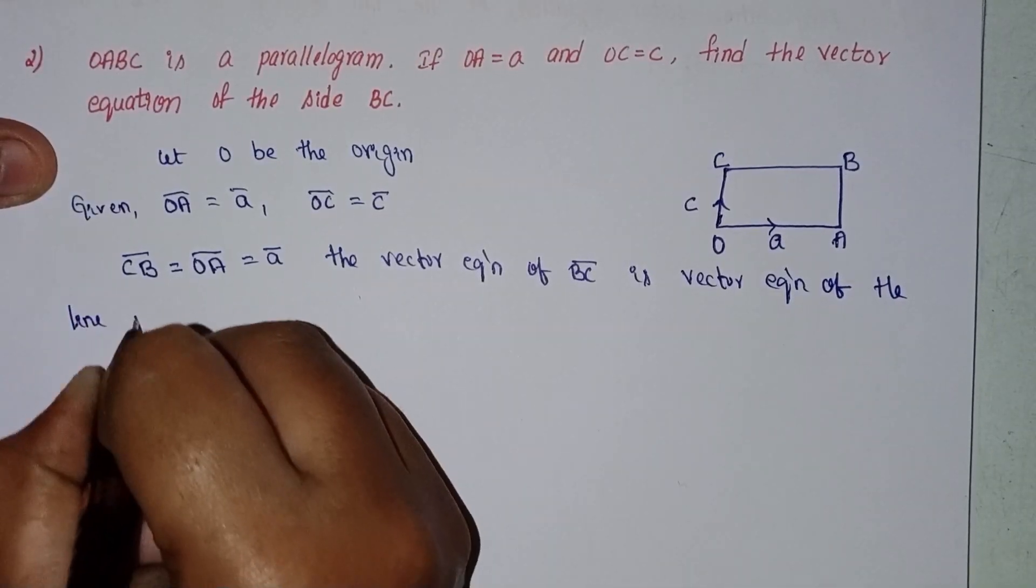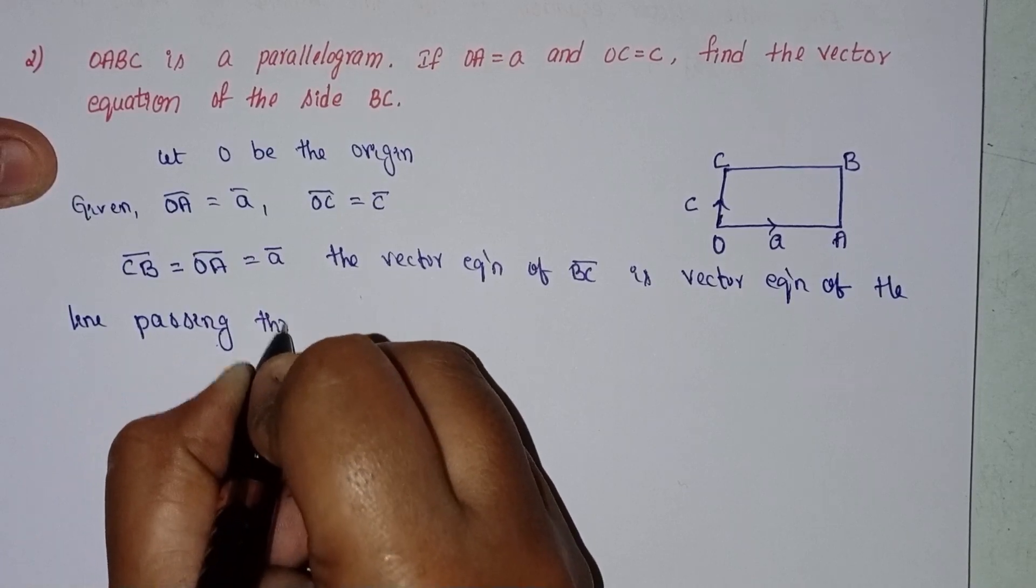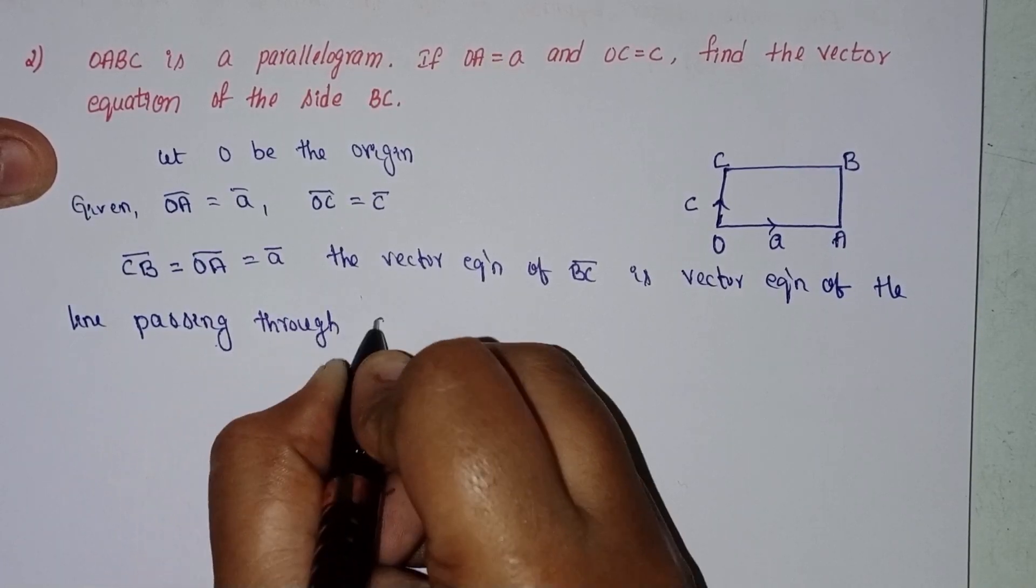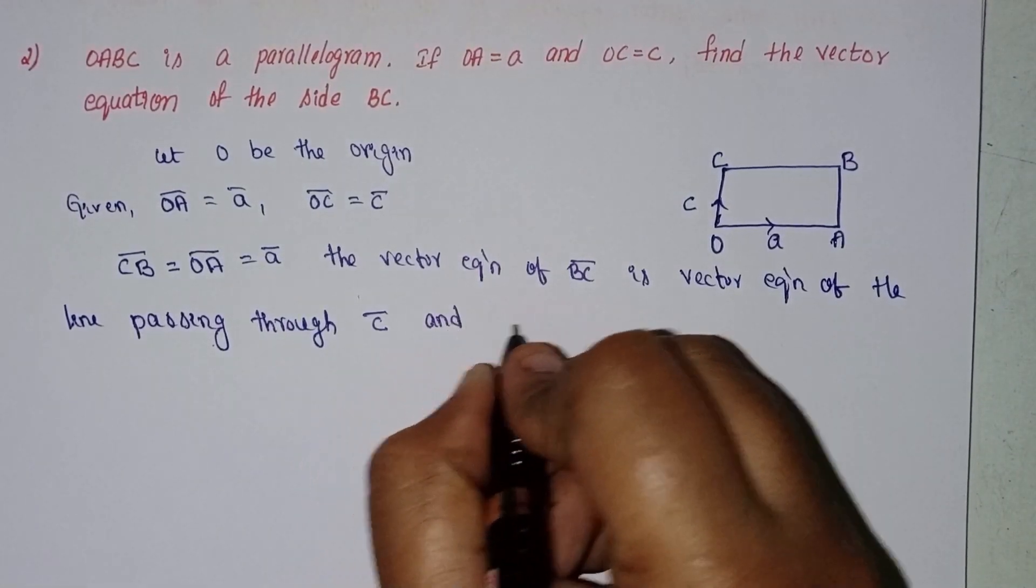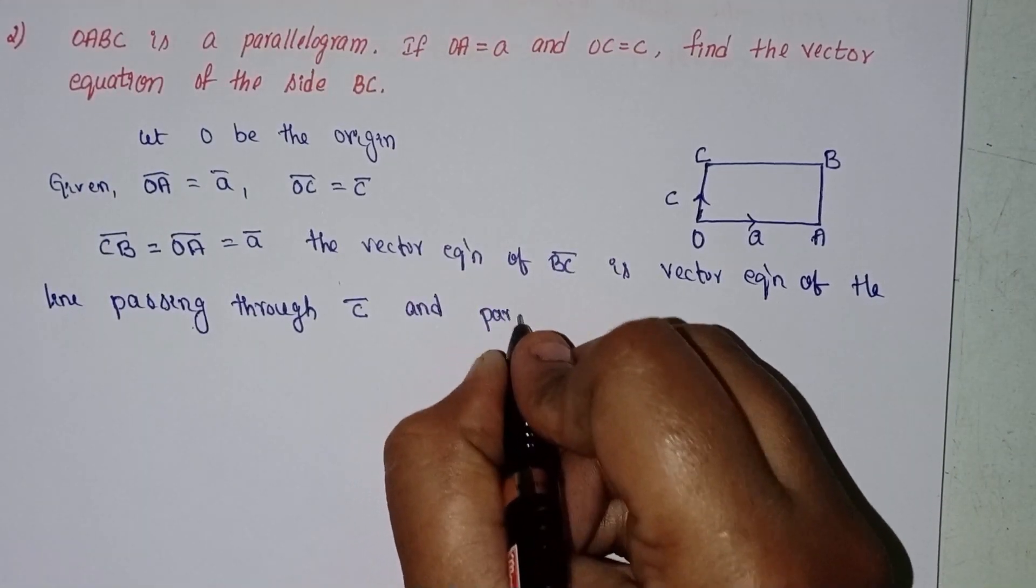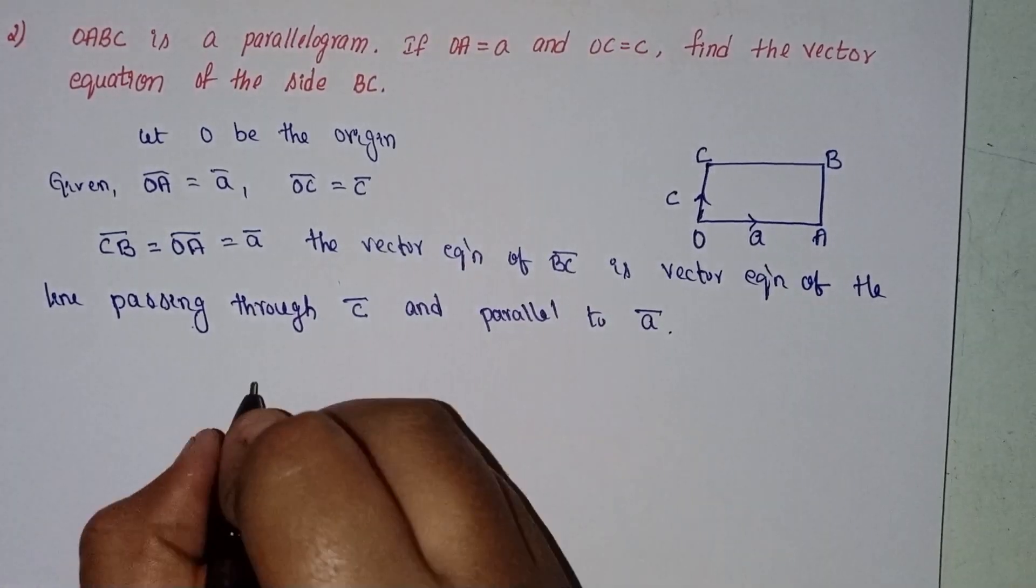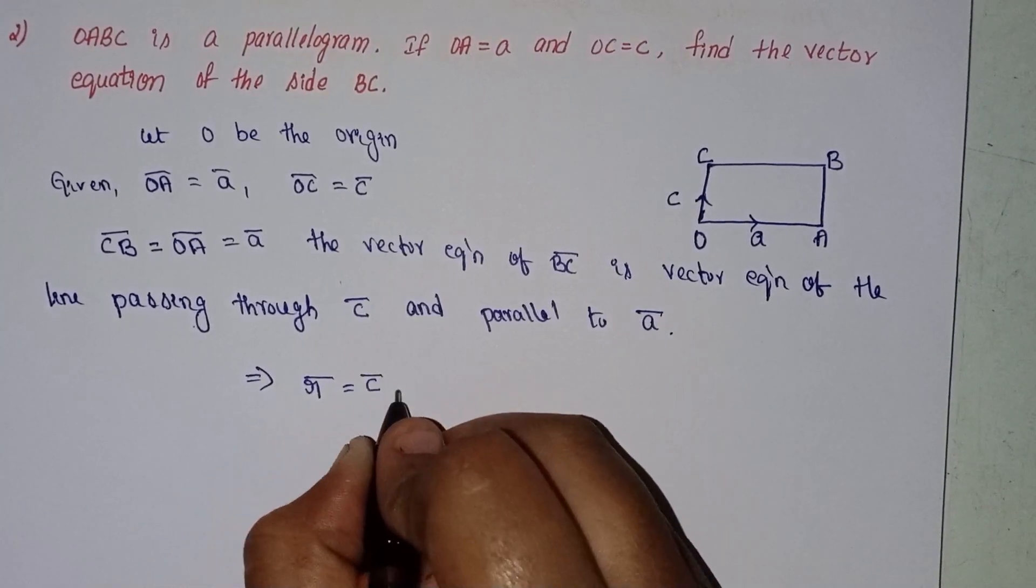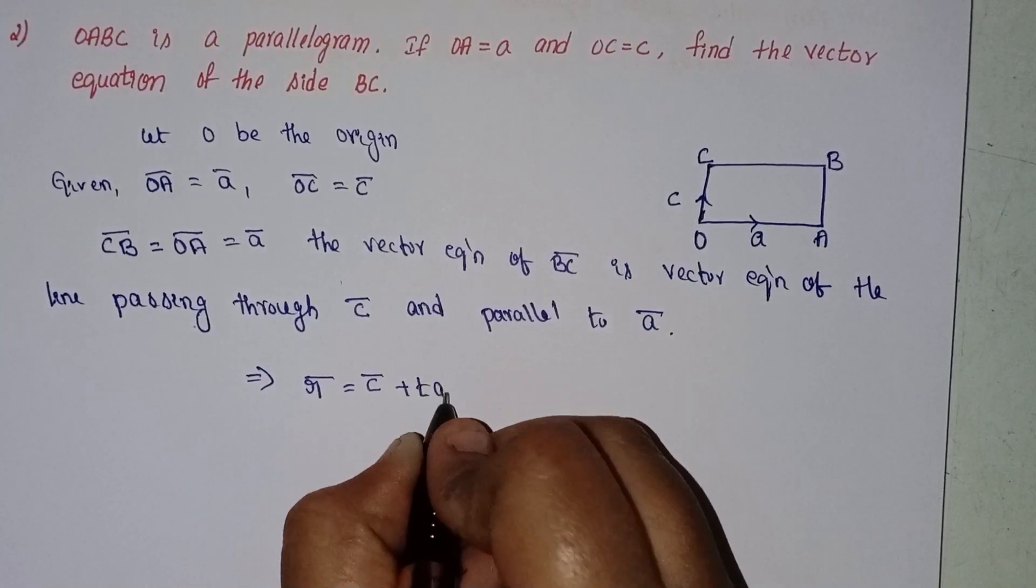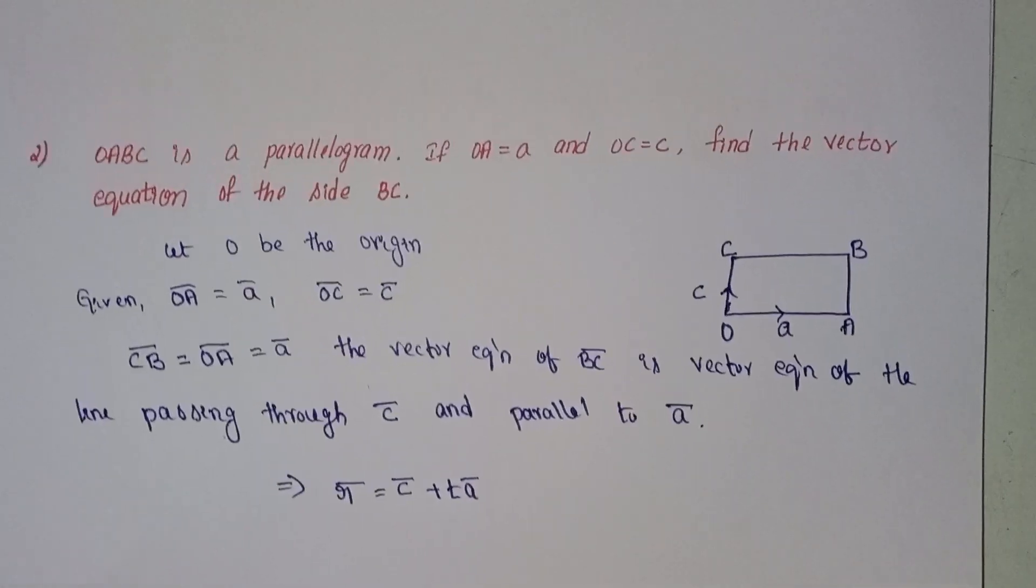line passing through C and parallel to a. Therefore, r equals c plus t times a. This is the formula. So this is the question